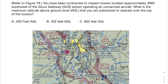So this first one says: you have been contracted to inspect towers located approximately four nautical miles southwest of the Sioux Gateway Airport, operating an unmanned aircraft. What is the maximum altitude above ground level (AGL) that you're authorized to operate over the top of the towers? Some important things to highlight: we're asked for AGL — all three answers are in AGL so you don't need to worry about MSL versus AGL. We're also told the SUX airport, and that towers are four nautical miles southwest.